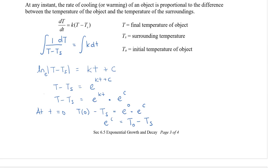So now I've actually derived the formula. If I know that e to the c is T naught minus Ts, I can now go back up to here and replace my e to the c with this T naught minus Ts. Now I have the formula T minus Ts, and I'm also going to put this in the front, is equal to T naught minus Ts times e to the power of kt. This is the formula that we use for Newton's law of cooling.